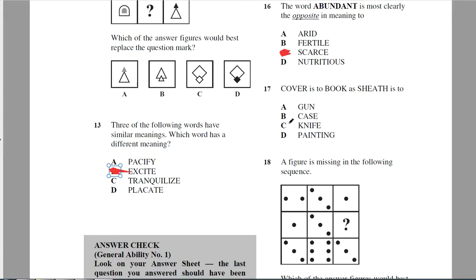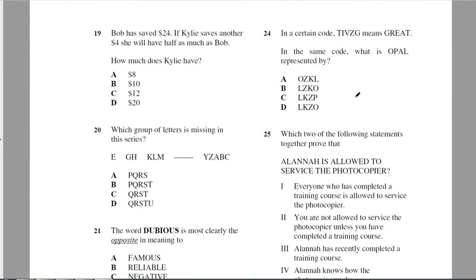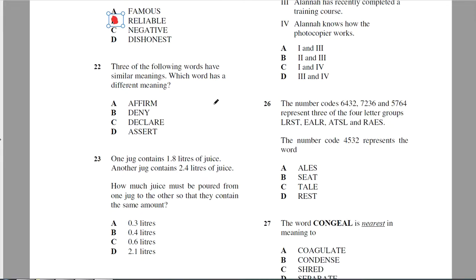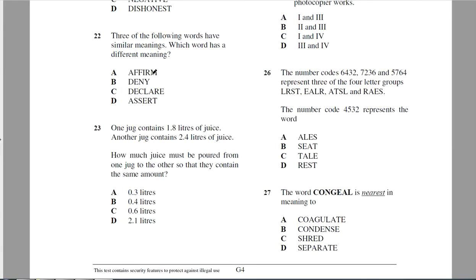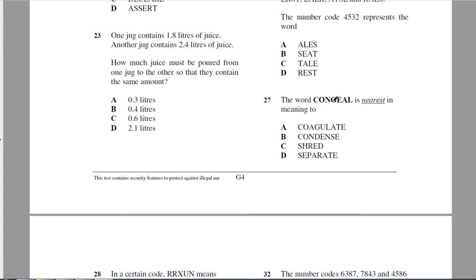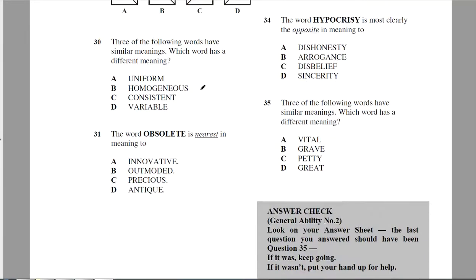Dubious is the opposite. Dubious means doubtful, it's the opposite of reliable. Three of the following have similar. Affirm, declare, assert, so it's deny. Congeal is nearest in meaning to coagulate. Three of them have similar meanings. Uniform, homogenous, consistent, all mean the same, so it's variable.